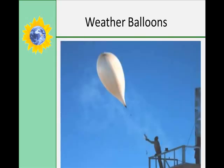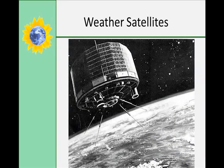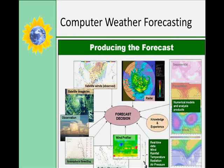Weather balloons have been around since the 1700s and carry instruments that measure temperature, air pressure, and humidity. Weather satellites have been launched since the 1960s — TIROS-1 was the first weather satellite, launched in 1960. Modern satellites carry sophisticated instrumentation that measures and records temperature, humidity, visible and infrared imagery, water vapor content, wind speed and direction, and solar radiation. Scientists then use computers to develop different models of how a front may move, and these predictions are used to make weather forecasts.